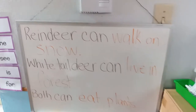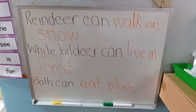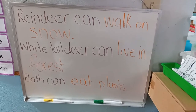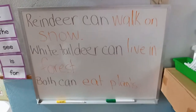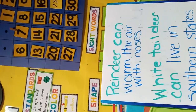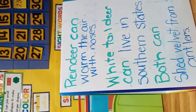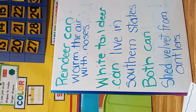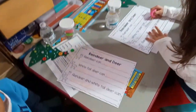This is our suggestion that we wrote. Reindeer can walk on snow. Whitetail deer can live in forests. Both can eat plants. Or you could write that reindeer can warm the air with their noses, that whitetail deer can live in southern states, and that both can shed the velvet from their antlers. Those are just some ideas of other things that you can write on your papers.